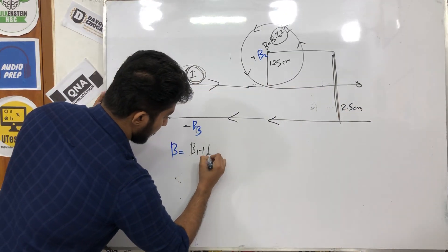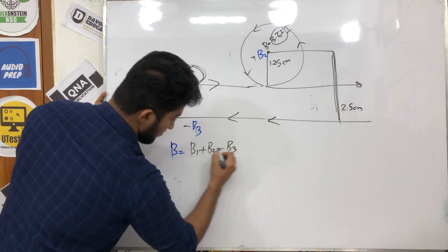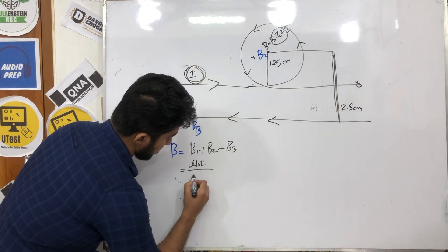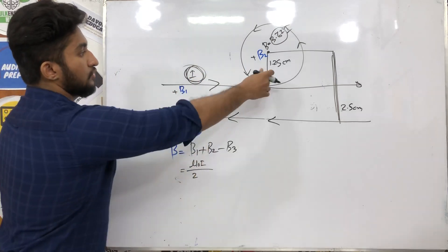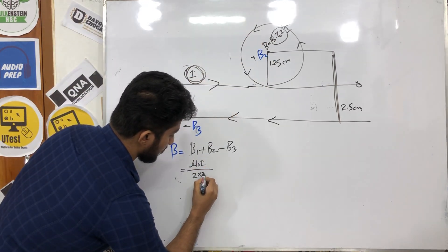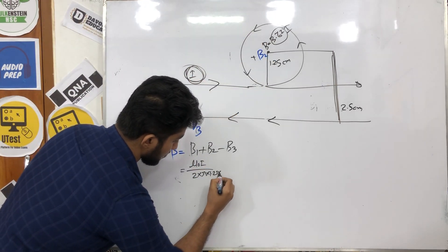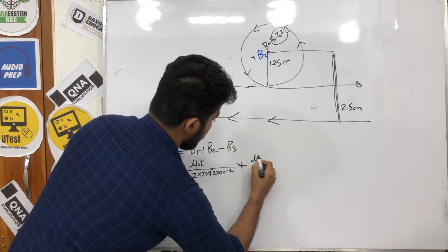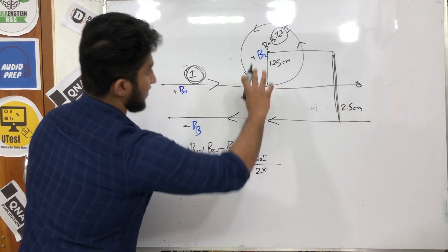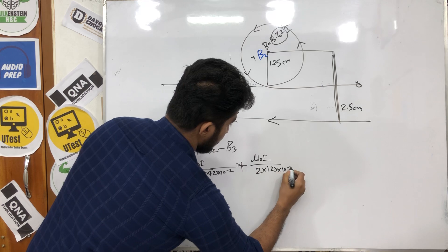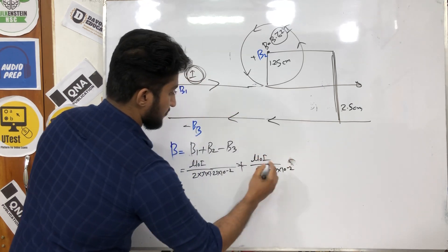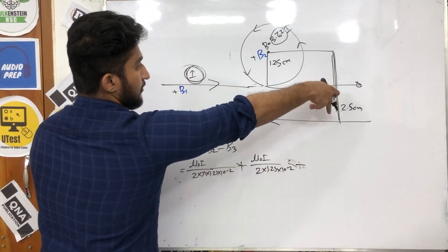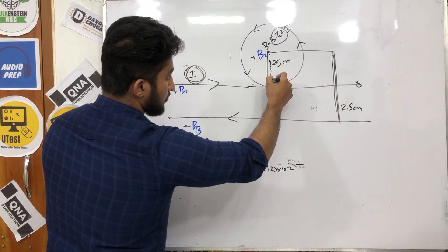This is B1 plus B2 minus B3. Mu naught I divided by twice, which is the same way — the total is 1.25, twice pi into 1.25, minus 2. This is a centimeter. Mu naught I divided by twice, which is 1.25, minus 2. If you have a plus, minus 1, minus 1 — the total is 2.5.